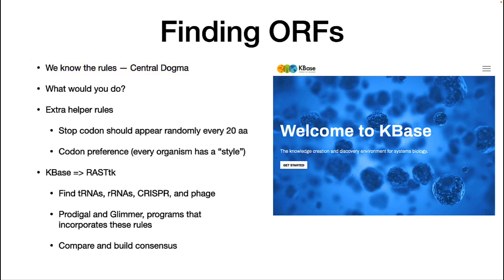A predicted coding sequence is not really called a gene, since we don't know for a fact it encodes a protein. Scientists call these predicted genes open reading frames, and use the acronym ORFs. If you apply just the simple rules we have learned, there are too many random genes you get for a piece of DNA. You saw this when you did the central dogma assignment with ORF finder — you get six different potential open reading frames: three in one strand, three in the other strand. So we need to add some extra helper rules.